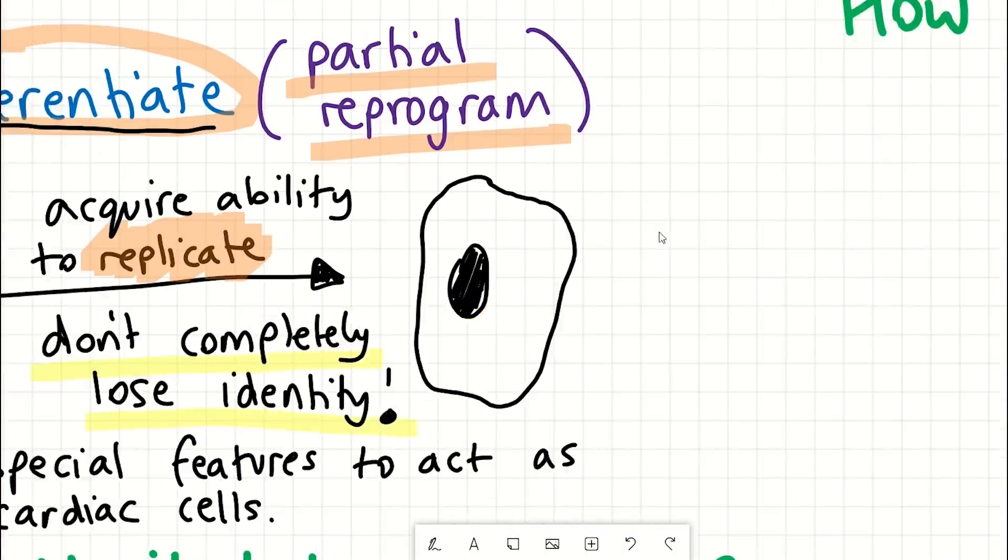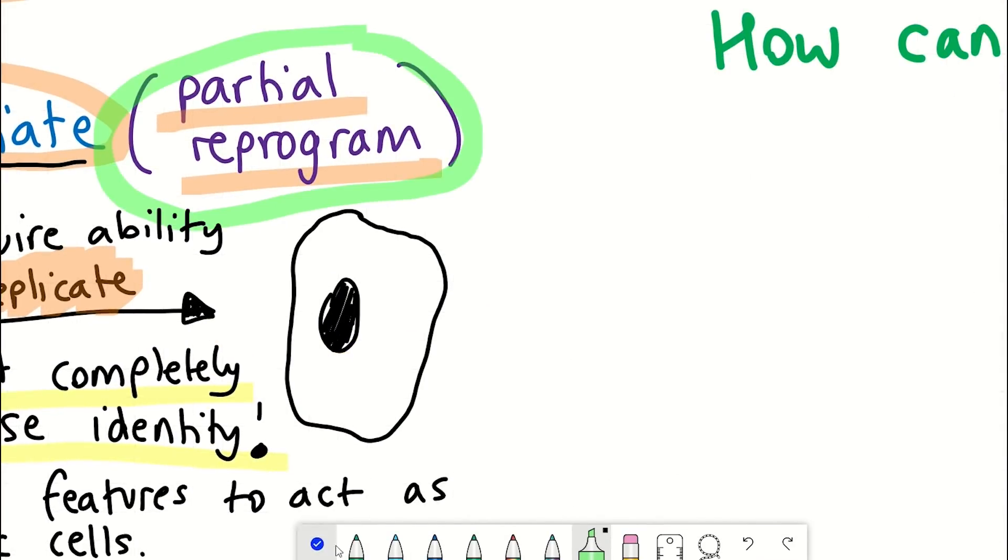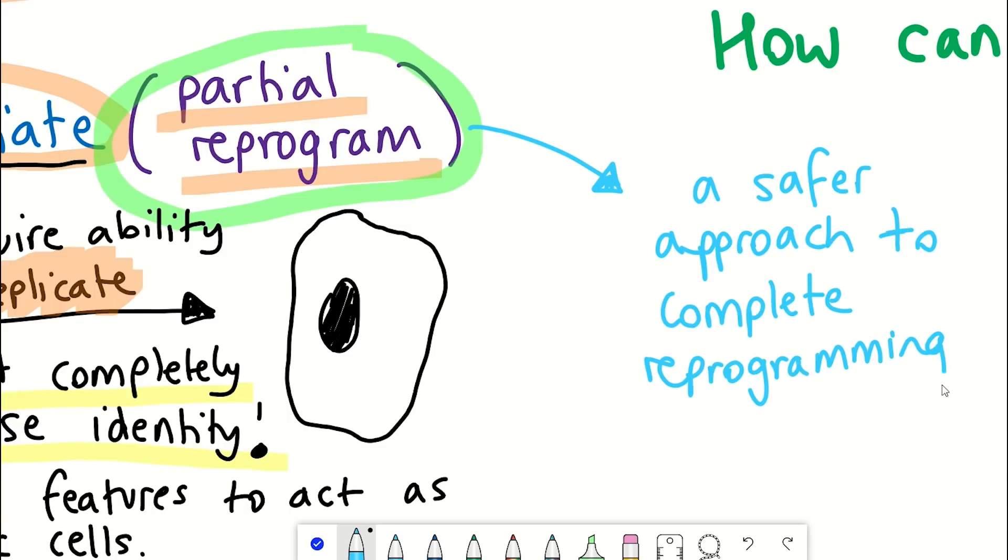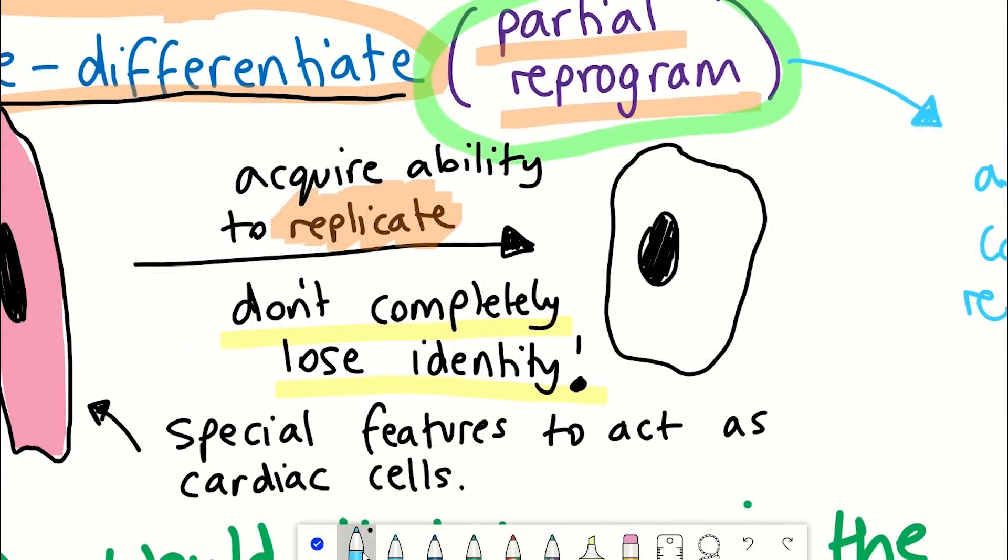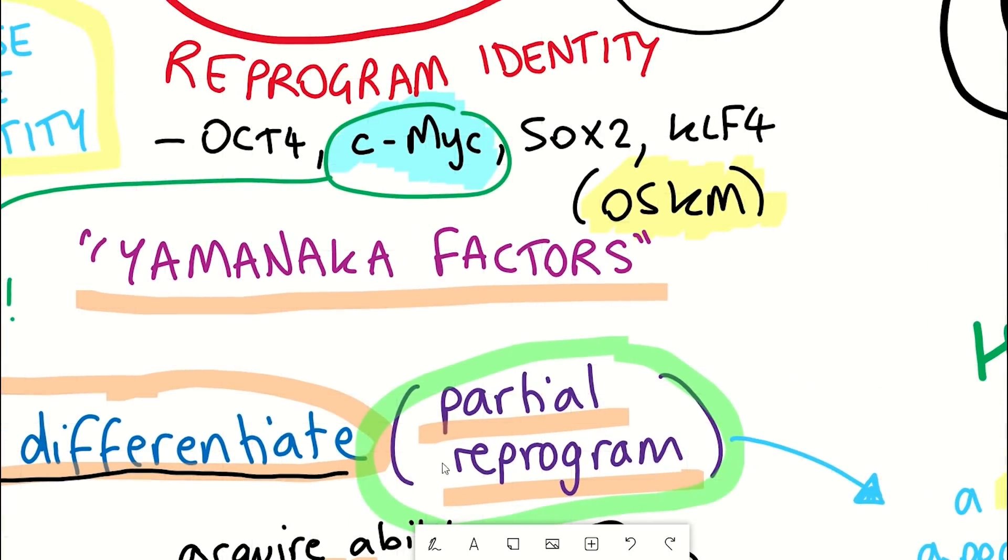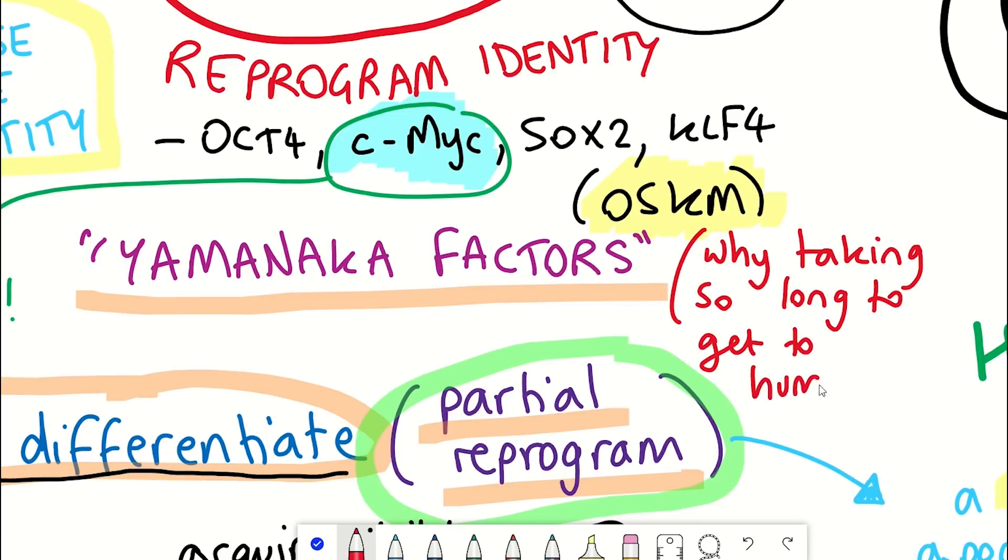So it's important to point out that what happened in this case was partial reprogramming, which is the potentially safer alternative to full cellular reprogramming, as it enables the reversal of cellular age of cells without them fully losing their identity. Now, you might be thinking, Yamanaka discovered the factors years ago. Why is it taking so long to get to human therapies? Why are we still looking at mouse models?